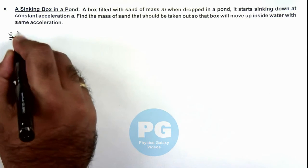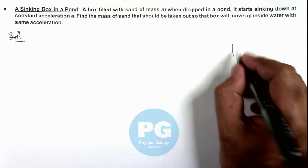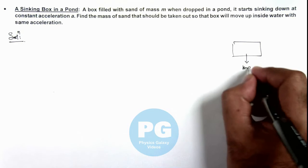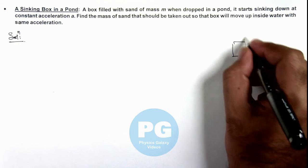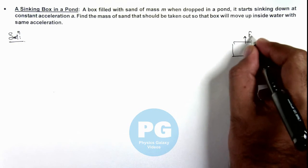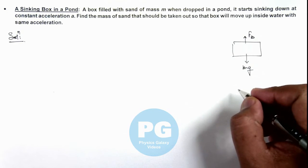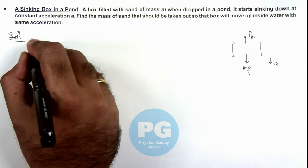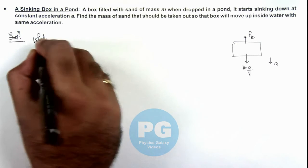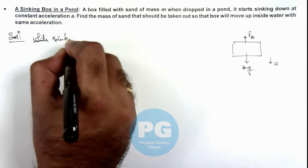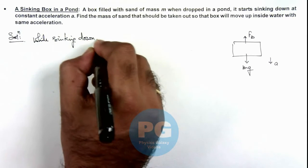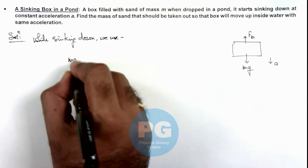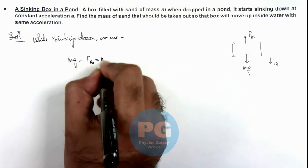Now in this situation, if we just see, this is a box and it is experiencing its weight mg in downward direction and upward it is experiencing buoyancy fb. This is sinking down with acceleration ay, so here we can write, while sinking down, we use mg minus fb is equal to m ay.